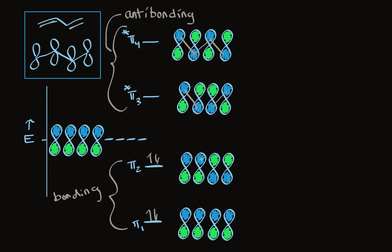Having noticed this relationship — all in phase, one break, two breaks, and three breaks — we say that these arrangements have zero, one, two, and three nodes. This term defines how many times we find adjacent p orbitals going from left to right that are not in phase. The more nodes we have, the less stable the orbital is. You'll always find that the most stable molecular orbital has all interacting p orbitals in phase. The next one up will have one node, the next two nodes, and the next three nodes.